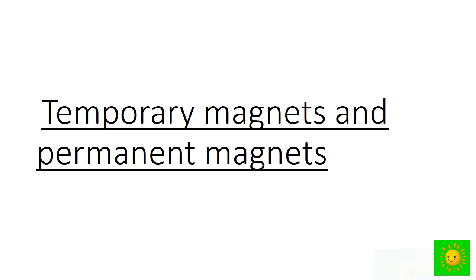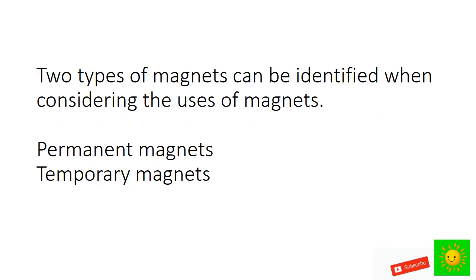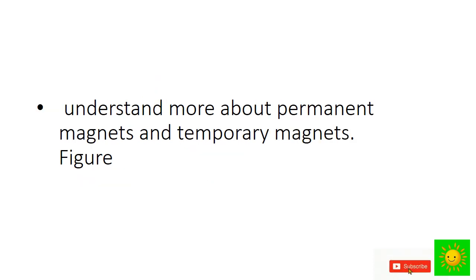Let's discuss temporary magnets and permanent magnets. Two types of magnets can be identified when considering the uses of magnets: permanent magnets and temporary magnets.